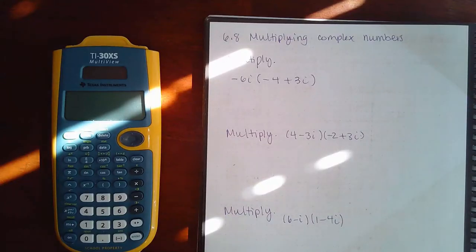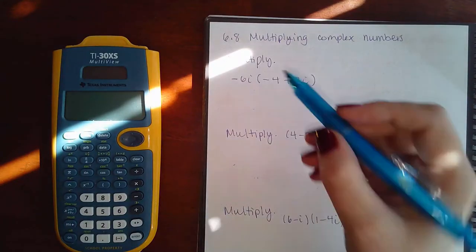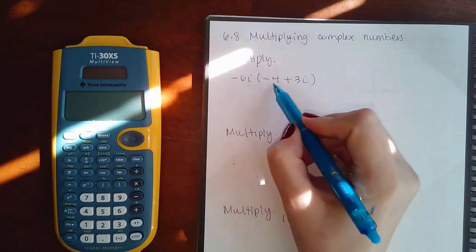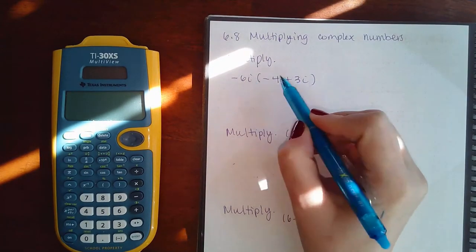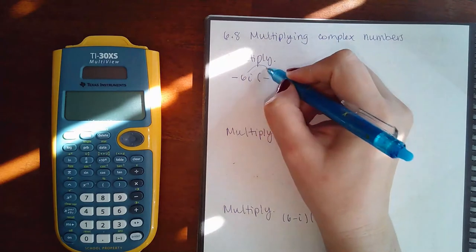Here we have multiplying complex numbers, and so we have one term times two terms, that's a monomial times a binomial. We have to distribute.